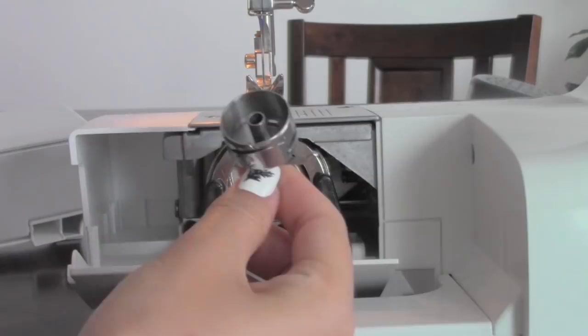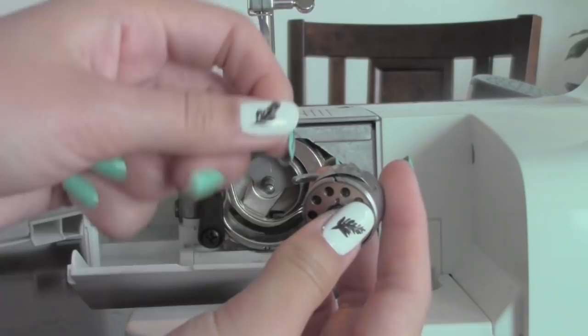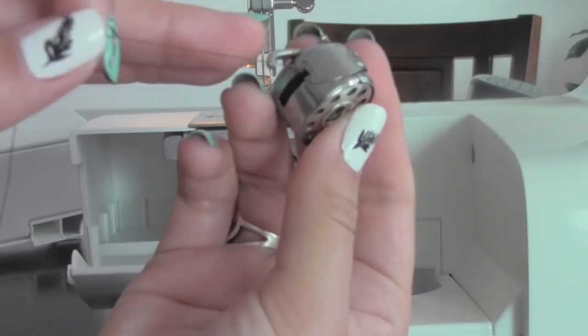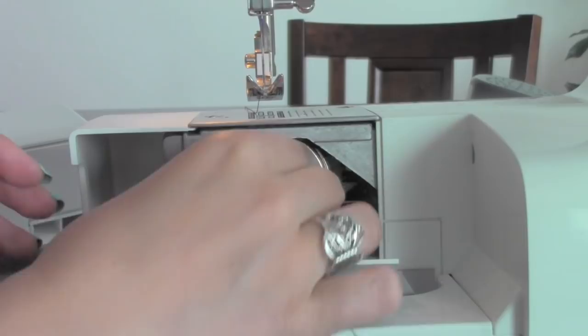Next you're going to take the bobbin holder out and place the bobbin inside. Get the end of the thread and pull it through this little loop. So it should be sticking out like so. Place it back inside.